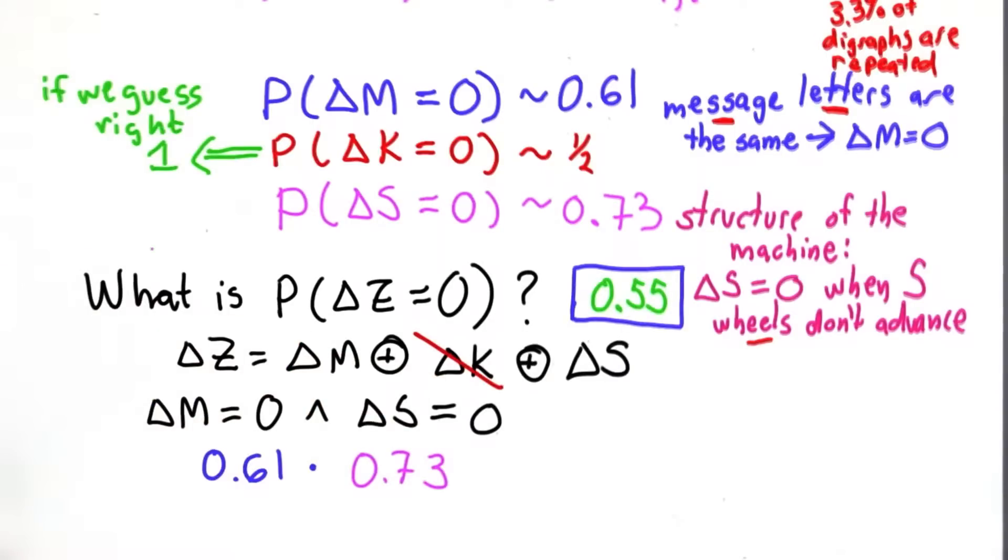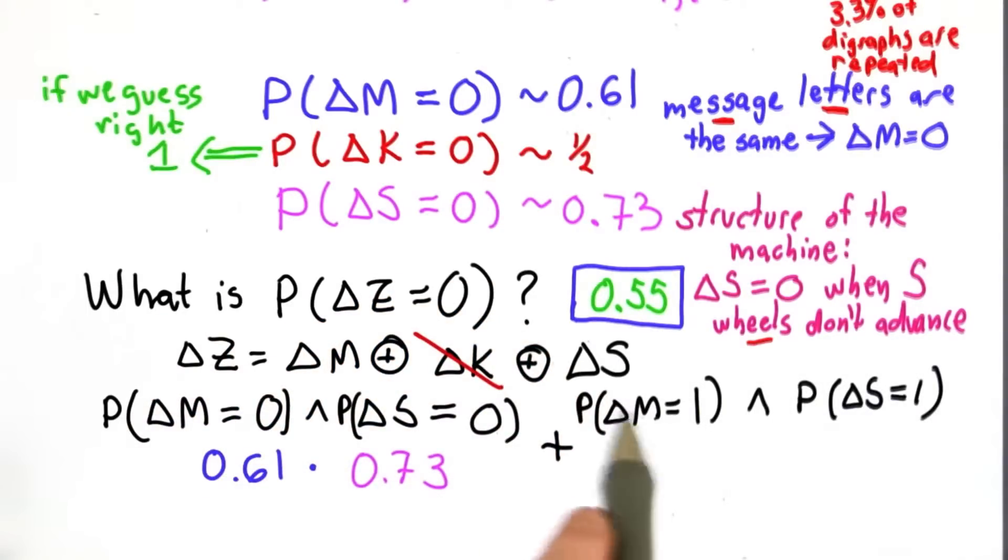But that's not the only way delta Z could be 0. The other way delta Z could be 0 is if both of these are 1. So it's the probability they're both 0 plus the probability they're both 1.